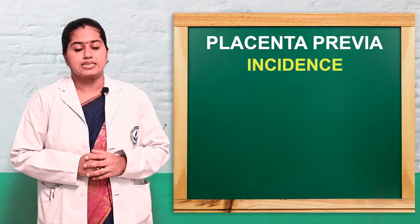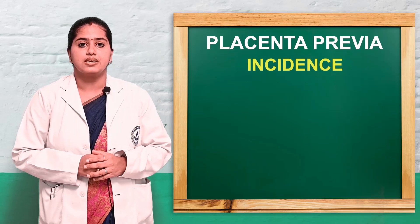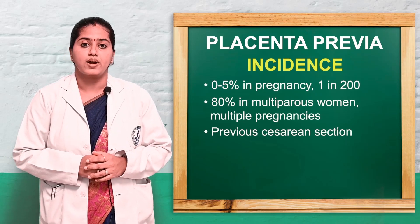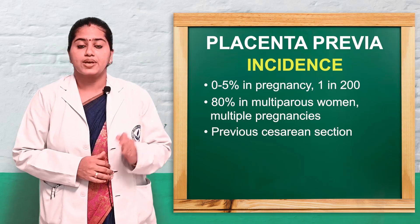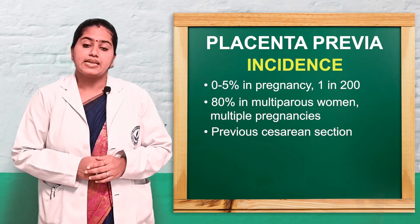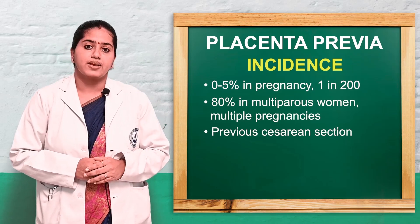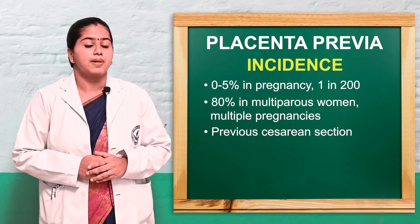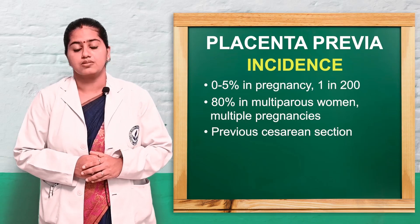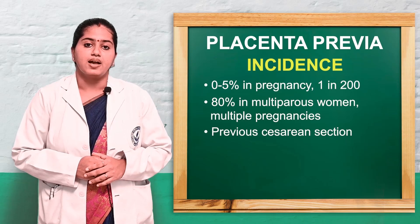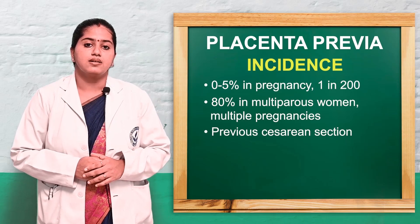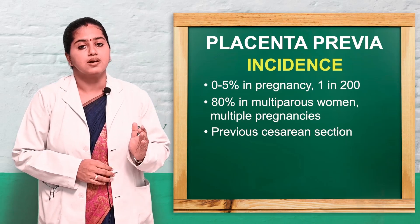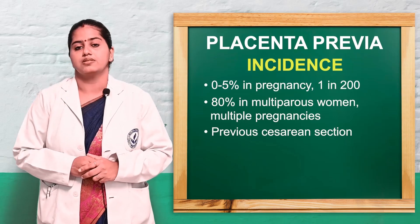The incidence of placenta previa is 0 to 5% of pregnancies, that is 1 in 200 pregnancies. In 80% of cases it occurs in multiparous women. Women with a previous caesarean section also carry a higher risk of developing placenta previa.